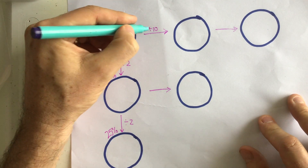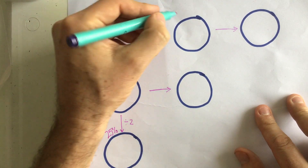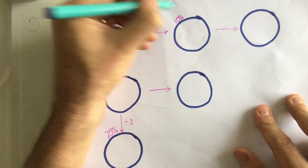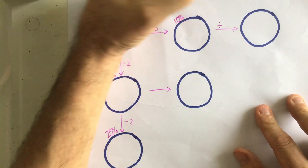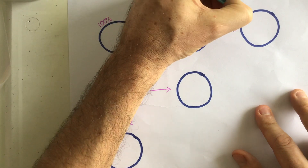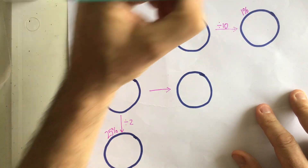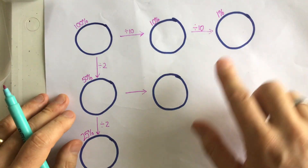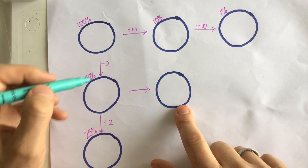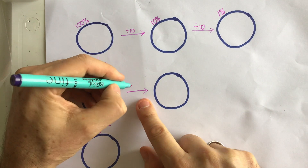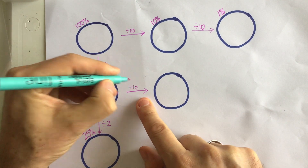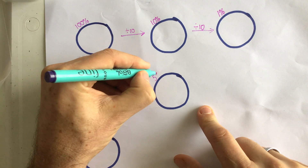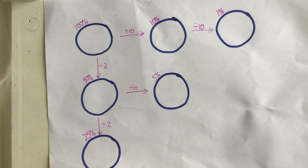So 100% divided by 10 — well, 100 divided by 10 is 10 — gives us 10%. And if we divide that by 10, 10 divided by 10 gives us 1%. So by dividing by 10 twice we can get to 1% of our number. This bubble here is going to be our 50% divided by 10, so 50 divided by 10 is 5%. This sheet will allow us to calculate percentages quite easily.